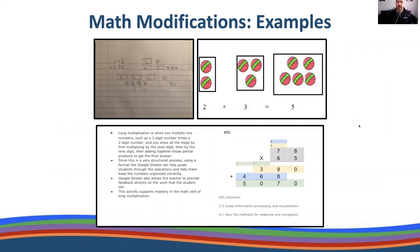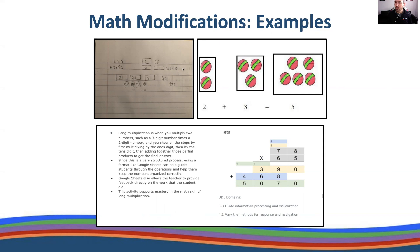Some math modification examples come from students at Rowan University. For example, when teaching money — which you may or may not want to teach depending on your student; you might just teach them to use an ATM card, Venmo, or Apple Pay — one modification shown in the top-left image is lining up a problem like 125 plus 255 so the decimals are aligned, and creating mini visuals of dollar bills and different sized coins.